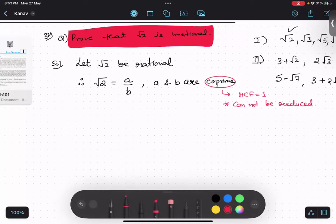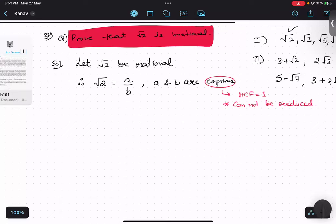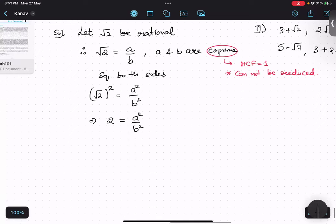Now, step number 1. What I am going to do is squaring both sides to remove root. So, root 2 square equals A square upon B square. So, it will be 2 equals A square upon B square. I will do the cross multiplication over here. So, B square equals A square upon 2.